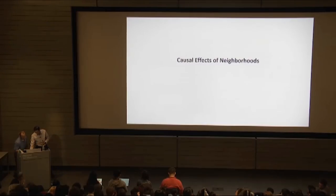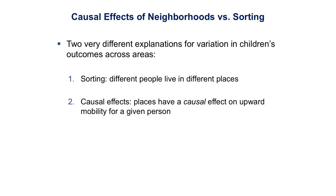There are two very different explanations for the variation in children's outcomes across areas. The first is what economists call sorting — the idea that different people live in different places. People in South Boston are different from people in Cambridge in terms of racial background, education, and so forth. If sorting is what's going on, the types of policies you'd want to address this issue would not be place-focused but people-focused.